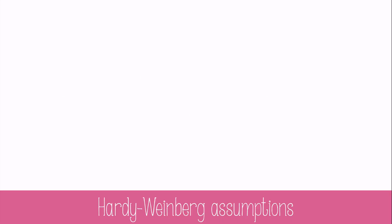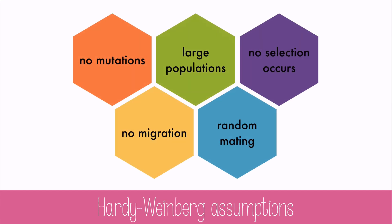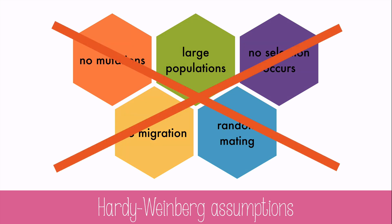Hardy and Weinberg made five major assumptions about populations that would keep the allele frequencies in the population exactly the same over time: there could be no mutations, no migration, there had to be a large population, random mating, and no selection. But these assumptions rarely occur in a population. Let's look at how each of these assumptions are broken.